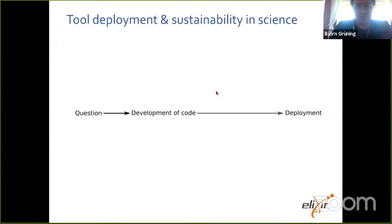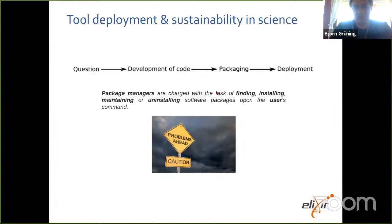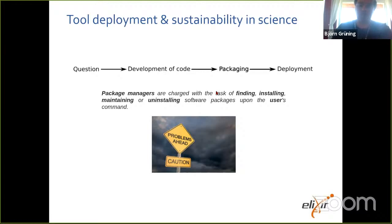If we start really from the beginning, the usual development path is that you have a question, you develop code or a program, and then you try to deploy it. The step between developing code and deployment is the packaging problem — it's been around since the beginning of IT. The simplest packaging system you can imagine is probably a tarball, where 40 years ago people were shipping around directories and needed to compile things themselves.